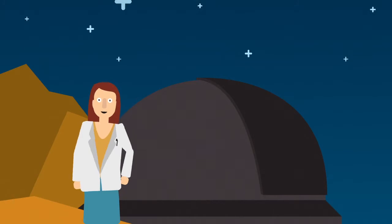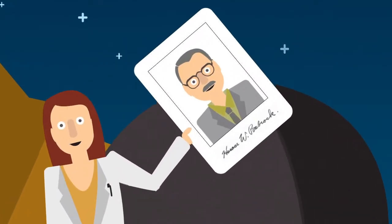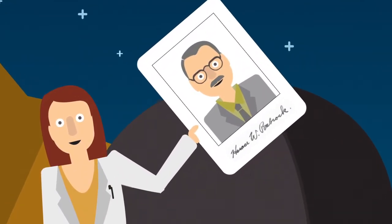To deal with this problem, an astronomer named Horace Babcock came up with an idea called adaptive optics back in 1953.